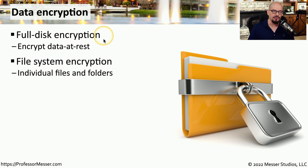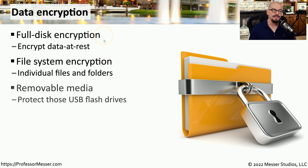If you're not encrypting the entire drive with full disk encryption, you could choose to encrypt individual files or folders. This is sometimes built into the file system you're using. For example, NTFS on Microsoft Windows supports the ability to pick and choose exactly what you'd like to have encrypted. And since it's so easy to lose one of those very small USB drives, it's also useful to encrypt all of the data stored on those drives.